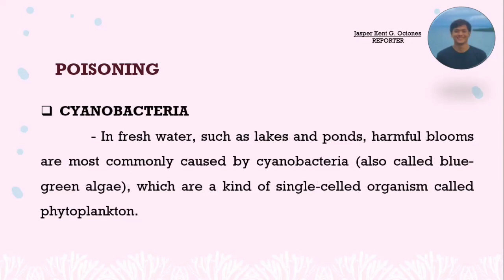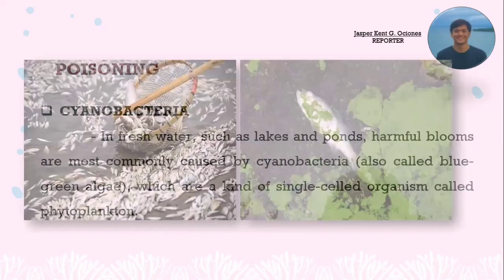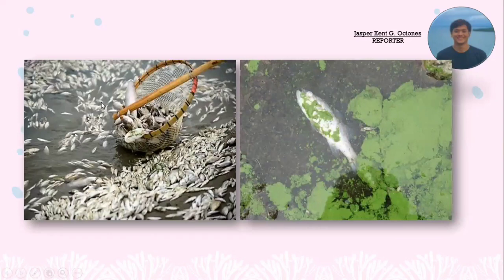In fresh water such as lakes and ponds, harmful blooms are most commonly caused by cyanobacteria, also called blue-green algae, which are a kind of single-celled organism called phytoplankton. An example shows fish kill due to ammonia on the left side, while the right side shows fish kill due to cyanobacteria — the blue-green algae that is harmful to fish.